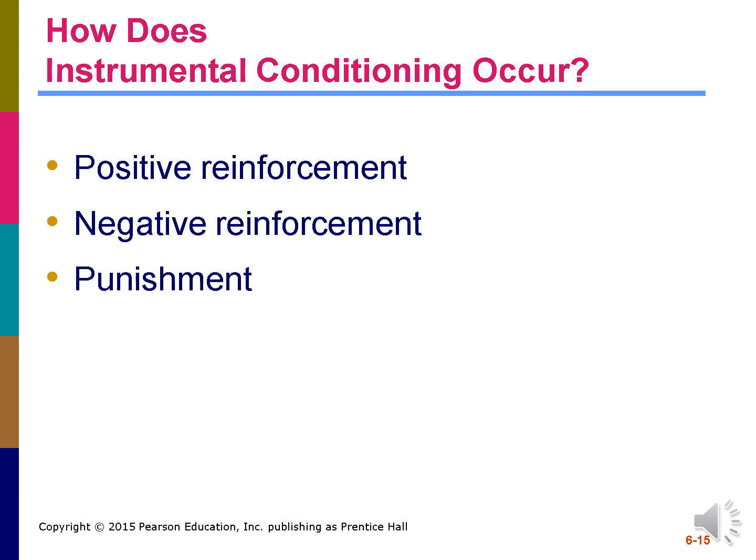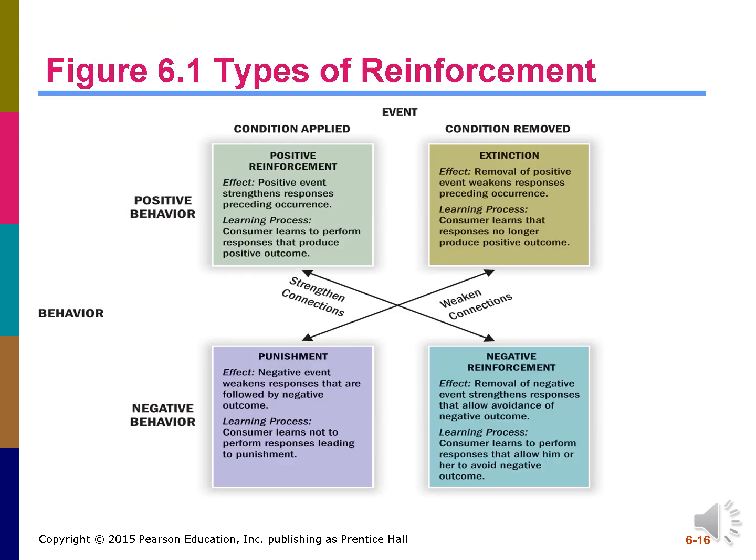Instrumental conditioning occurs in one of three ways: positive reinforcement, negative reinforcement, and punishment. Positive reinforcement comes in the form of a reward. Negative reinforcement shows how a negative outcome can be avoided. Punishment occurs when unpleasant events follow a response. Extinction occurs when there is no reinforcement — in other words, the conditioning is not activated because it is not reinforced. This figure will help to reinforce the relationships among these four conditions.